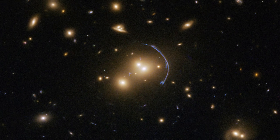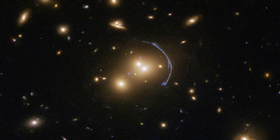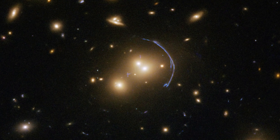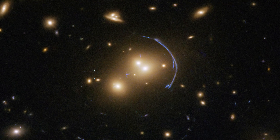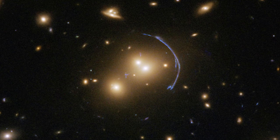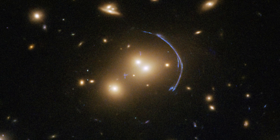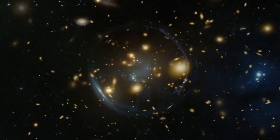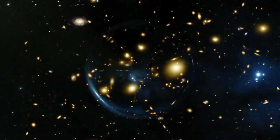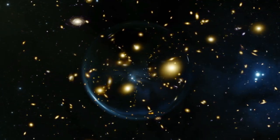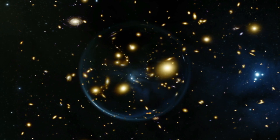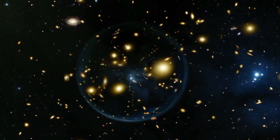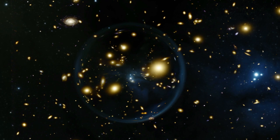Hubble can resolve details within the multiple banana-shaped arcs that are one of the main results of gravitational lensing, as the images of background sources are distorted. An important consequence of lensing distortion is magnification, allowing us to observe objects that would otherwise be too far away and too faint to be seen.